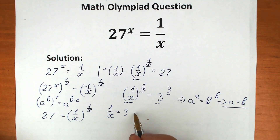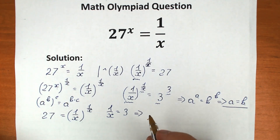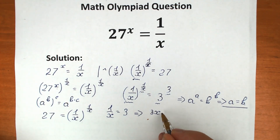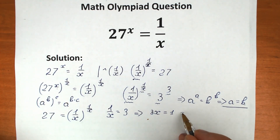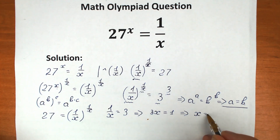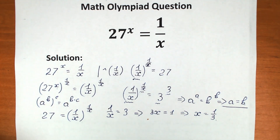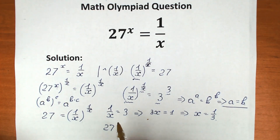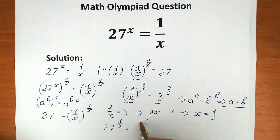This is our solution to this challenge. From 1 over x equal to 3, we cross-multiply to get 3x equal to 1, and therefore x equal to 1 over 3. Now let's check this root real quick. We have 27 to the power 1 third equal to 1 over (1 over 3).